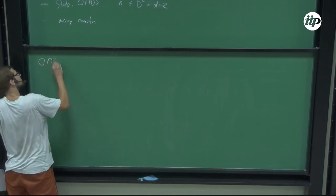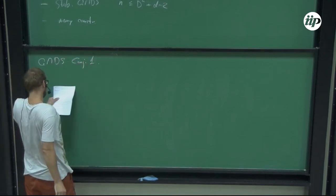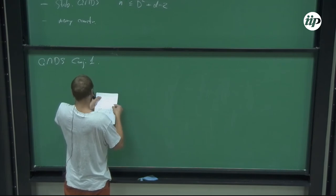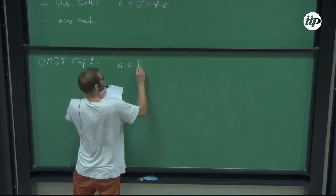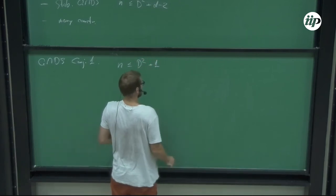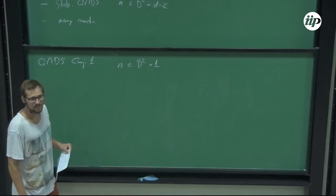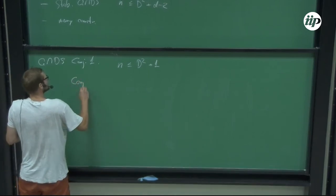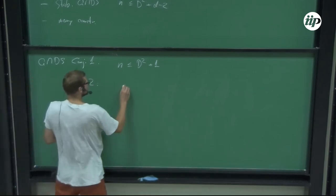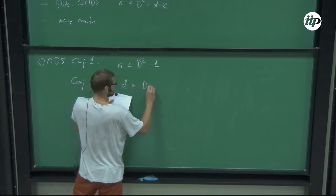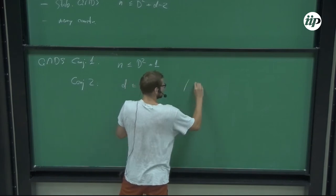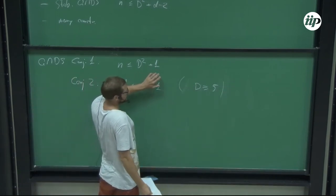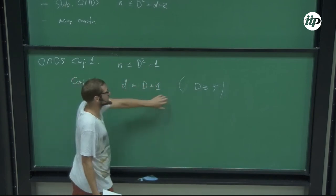There are two conjectures on quantum MDS codes — I think both are due to Markus Grassl or related people. Conjecture one: N has to be smaller or equal to D² + 1, up to exceptional cases. Conjecture two: the distance has to be smaller or equal to D + 1 for all local dimensions D ≥ 5.